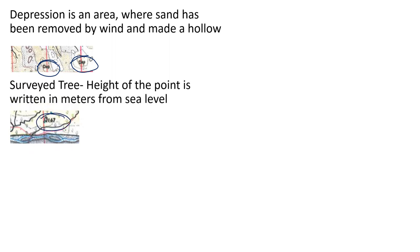Many times we see DEP for depression, because this is an arid region. In this area, when sand is removed by strong winds they make a hollow, so it is a kind of depression or hollow, written as DEP. Next we can see a black colored tree symbol with a number next to it — this is called a survey tree.